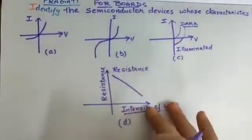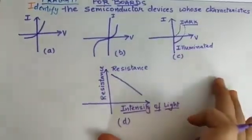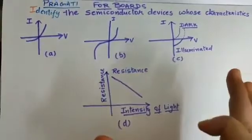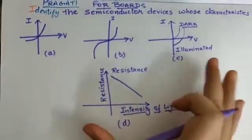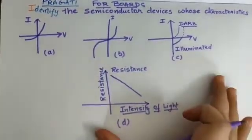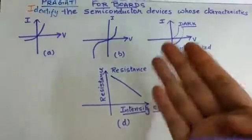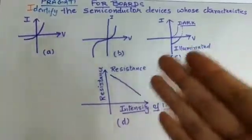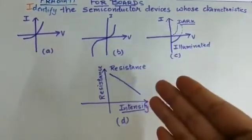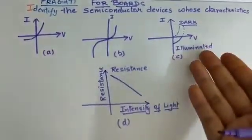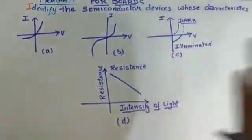These four graphs are from the semiconductor chapter and on the board exam it is one mark. Either they will give you a graph and you have to identify which graph it is, or you will have a particular device and it will make a graph.